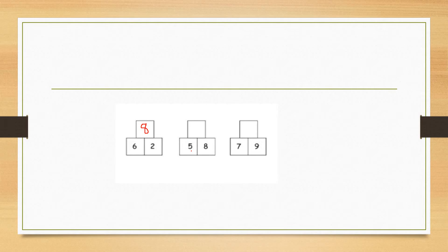Next, we have to add 5 and 8. Why do we have to take 8 in our mind? Because 8 is the bigger number. So we have to take 8 in our mind and 5 in our fingers. Then we have to count up after 8. That is 9, 10, 11, 12, 13. So we got the answer 13. Number sentence: 5 plus 8 is equal to 13.